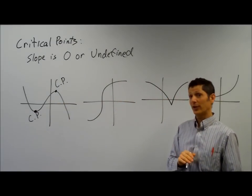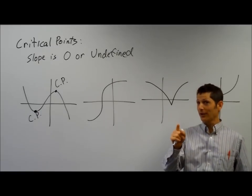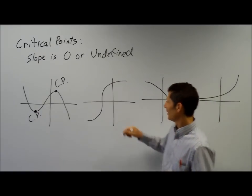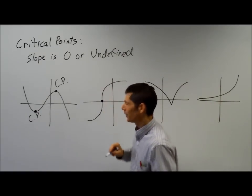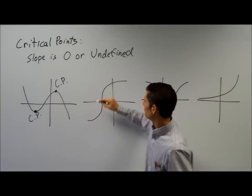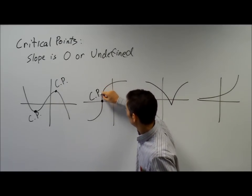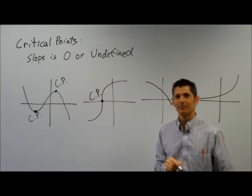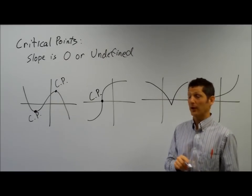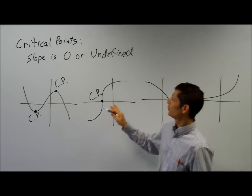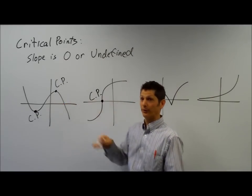How many critical points on the next one? One. It's right in the middle there. What's going on with the slope here? It's undefined — undefined slope, right? Critical points are places where the slope is zero or undefined.